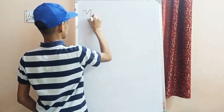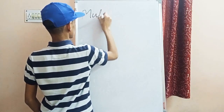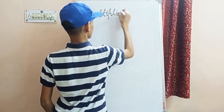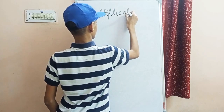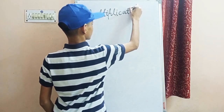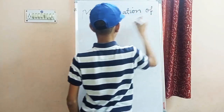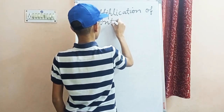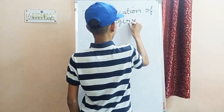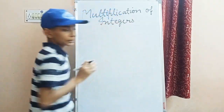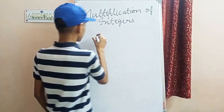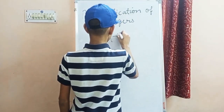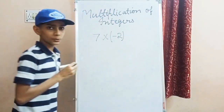So first, here we will write: Multiplication of Integers. Now, if we have a question — 7 into minus 2 — then how will we do it?